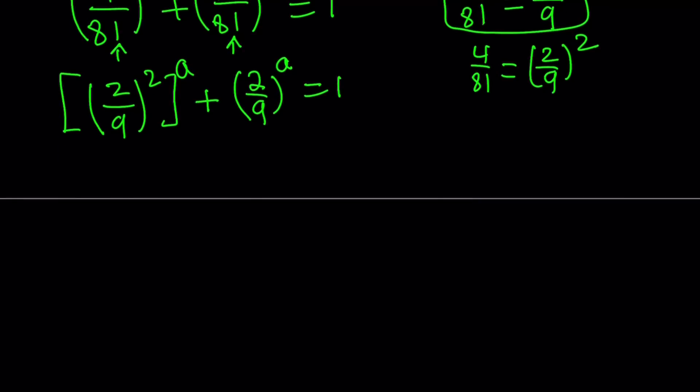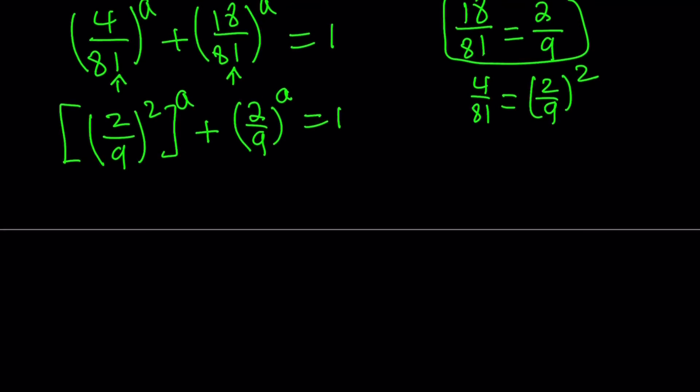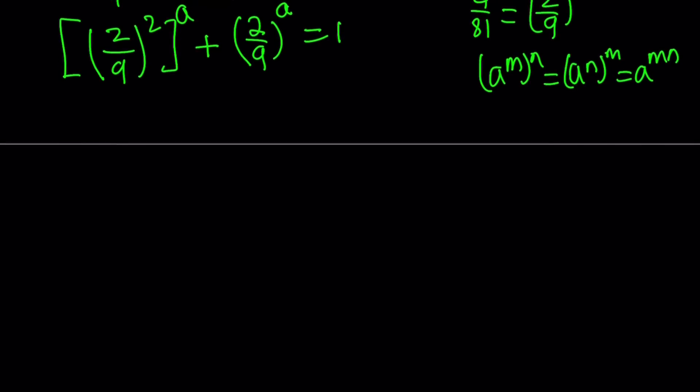Now, we have 2 over 9 to the power 2, to the power a. Instead of squaring the 2 ninths, why don't we raise it to the power a first? In other words, if you have a to the power m to the power n, this is the same thing as a to the power n to the power m because they're both equal to a to the power mn. So I can go ahead and write this as 2 over 9 to the power a squared plus 2 over 9 to the power a equals 1.